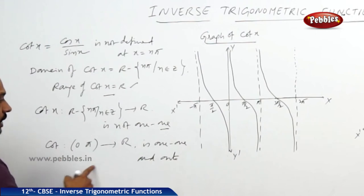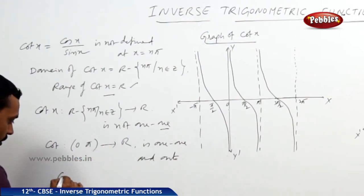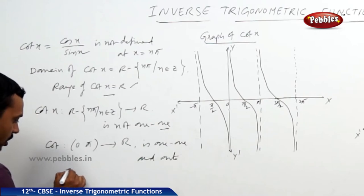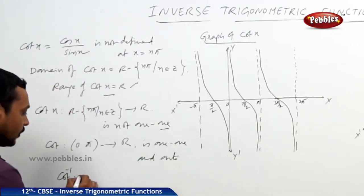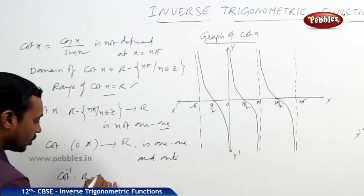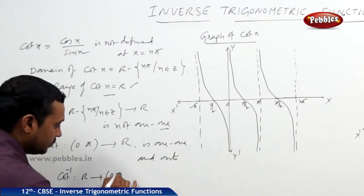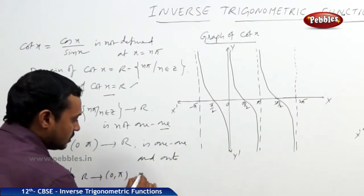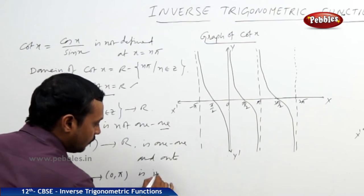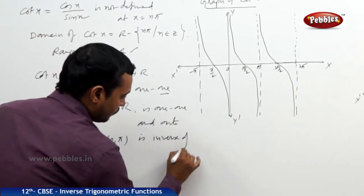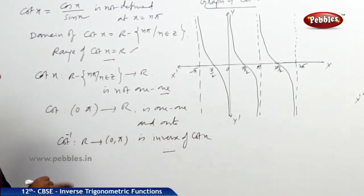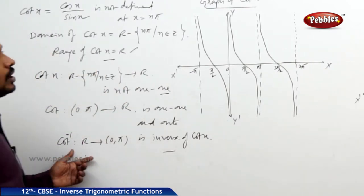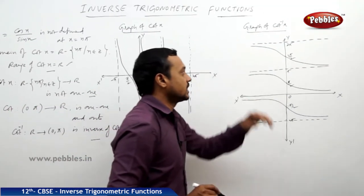Since cot is a bijection (one-to-one and onto) in the interval (0, pi), therefore the inverse of cot — known as cot inverse or arc cot — is defined from R to (0, pi) as the inverse of cot x. Now let us see the graph of cot inverse x.